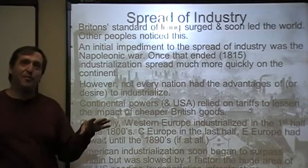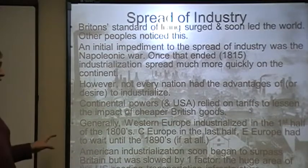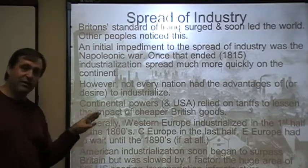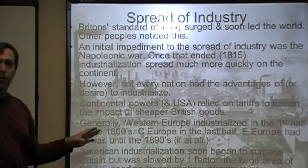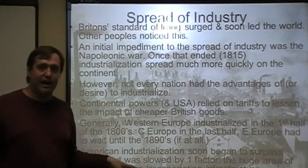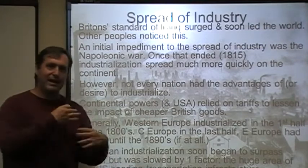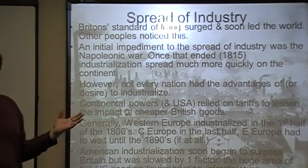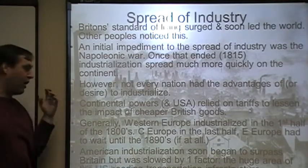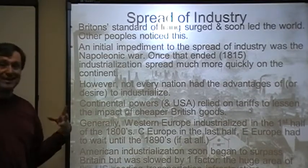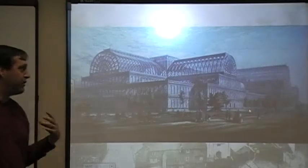Western Europe industrialized in the first half of the 1800s. Central Europe in the second half. Eastern Europe waited until the 1890s or early 1900s, if at all. Some places industrialization never really got well implanted. American industrialization began to surpass Britain by the late 1800s, but was slowed by the huge land area requiring transportation infrastructure. Once bridged — especially post-Civil War — industrialization shot off the charts, with massive industrialization in South America in the late 1800s as well.